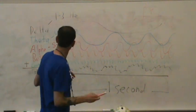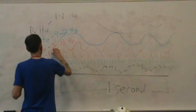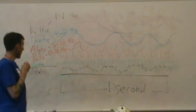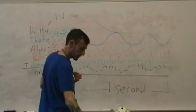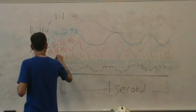Faster still, we have beta, which is going to go from about thirteen to thirty hertz. And then finally, gamma, which is going to be greater than thirty hertz.